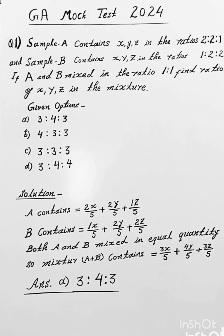If A and B are mixed in the ratio 1:1, find the ratio of X, Y, Z in the mixture.